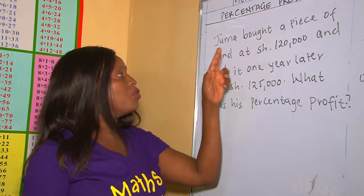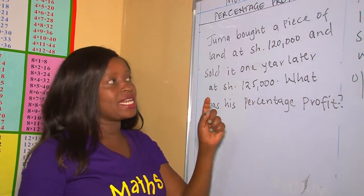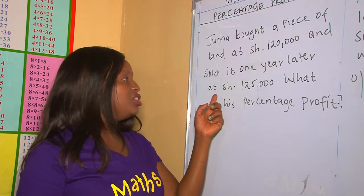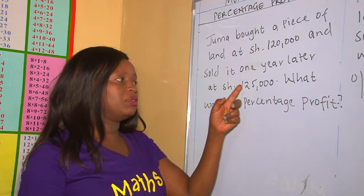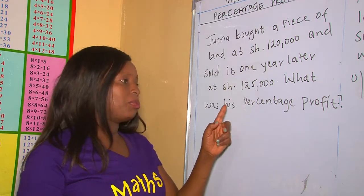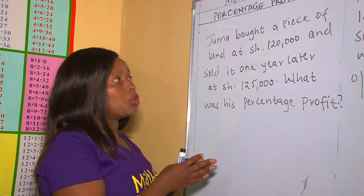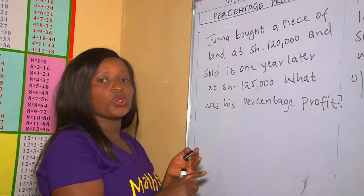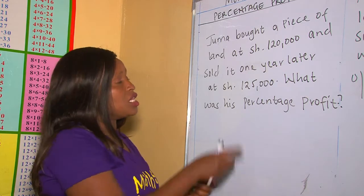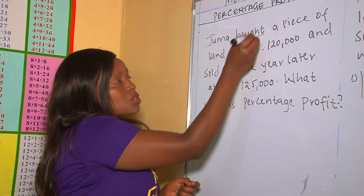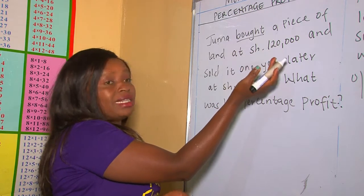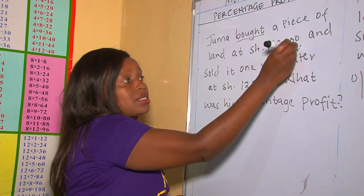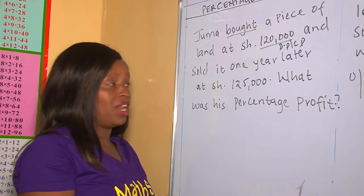In this next example, we are told that Juma bought a piece of land for 120,000 shillings and sold it one year later for 125,000 shillings. What was his percentage profit? To answer this, you analyze step by step: identify what you are given — the buying price is 120,000, which is the cost price he incurred in purchasing that piece of land.